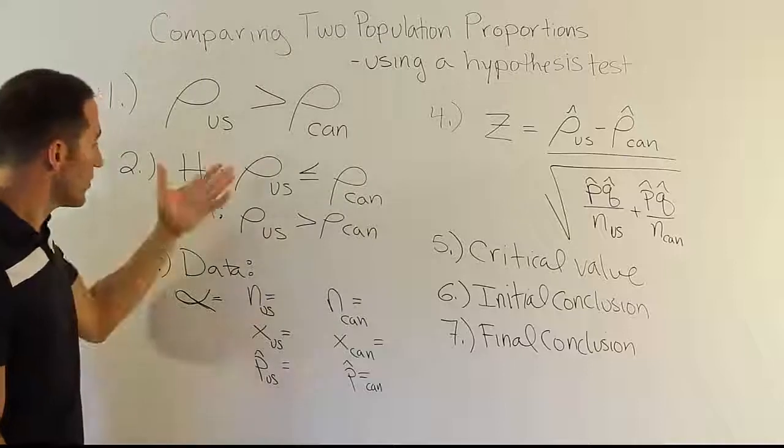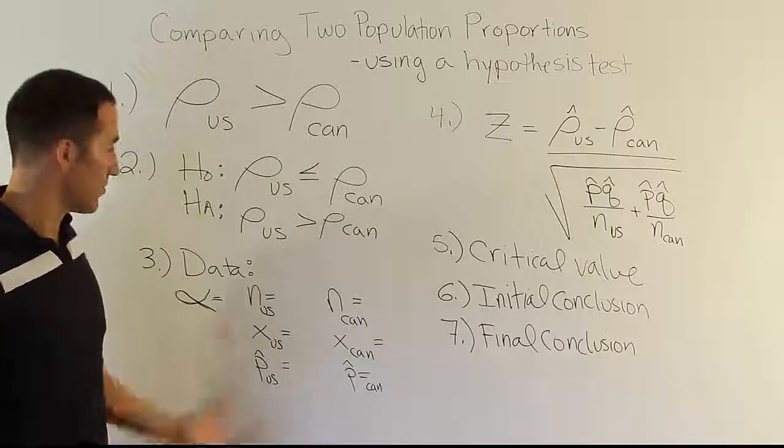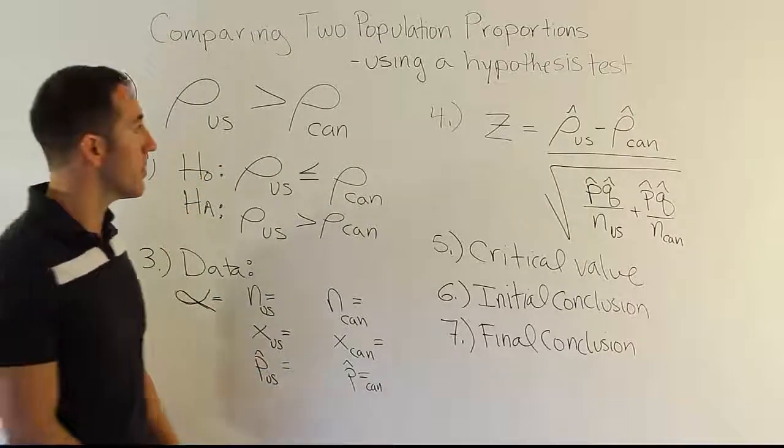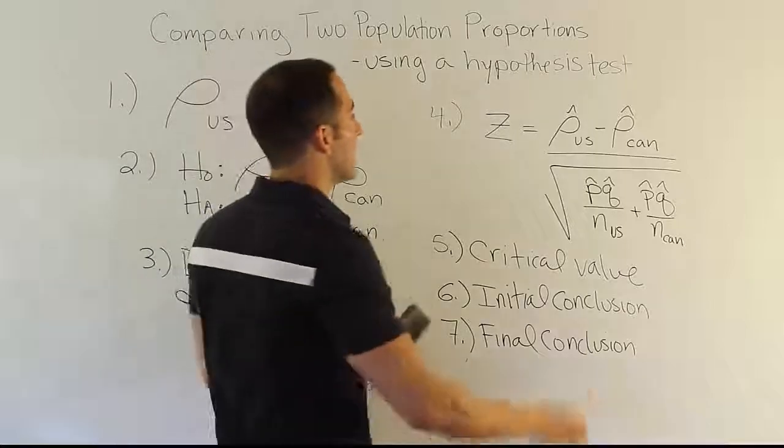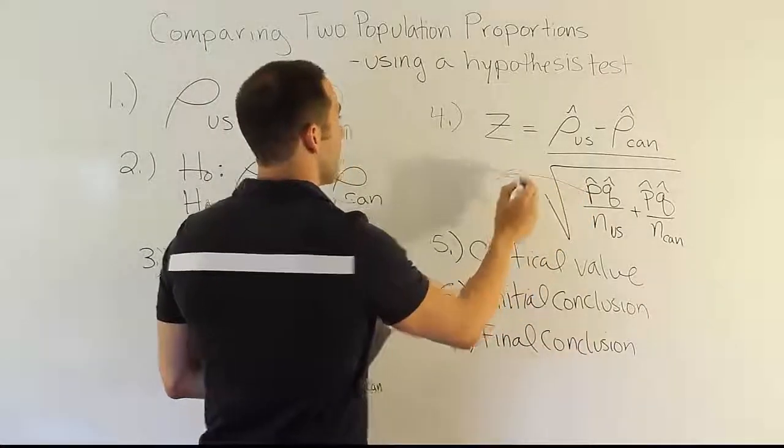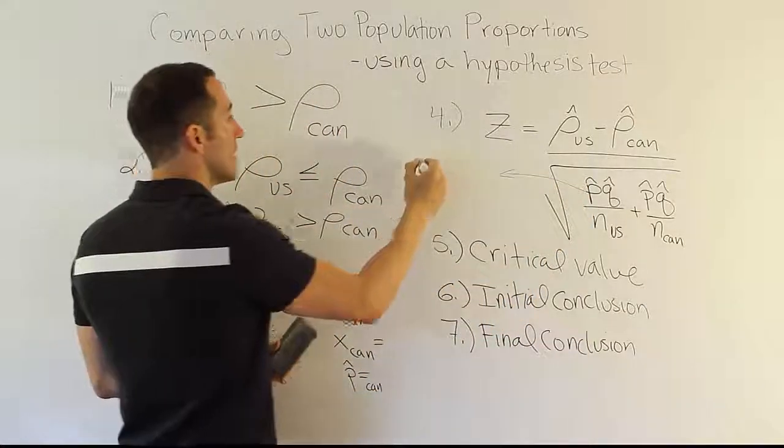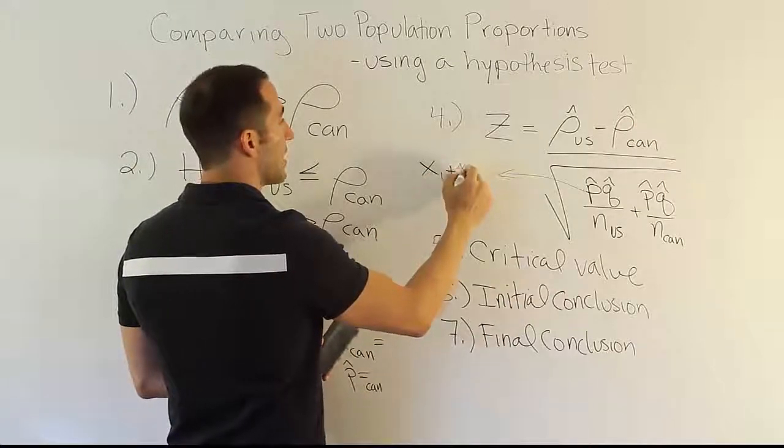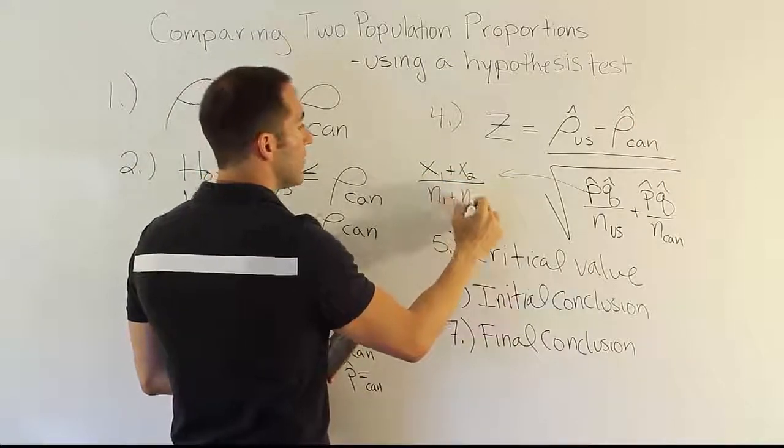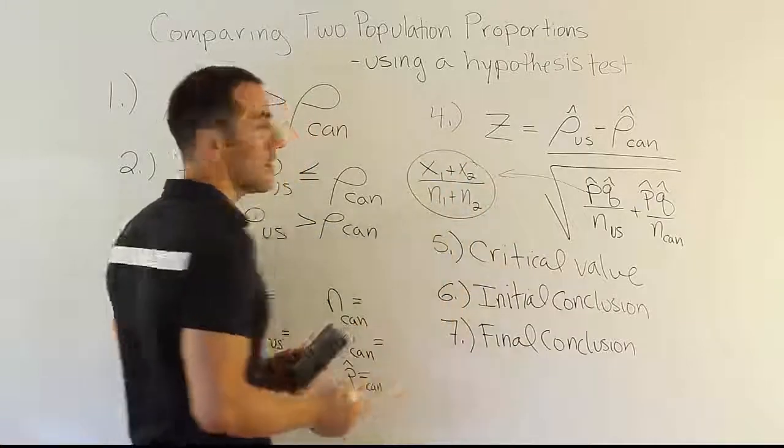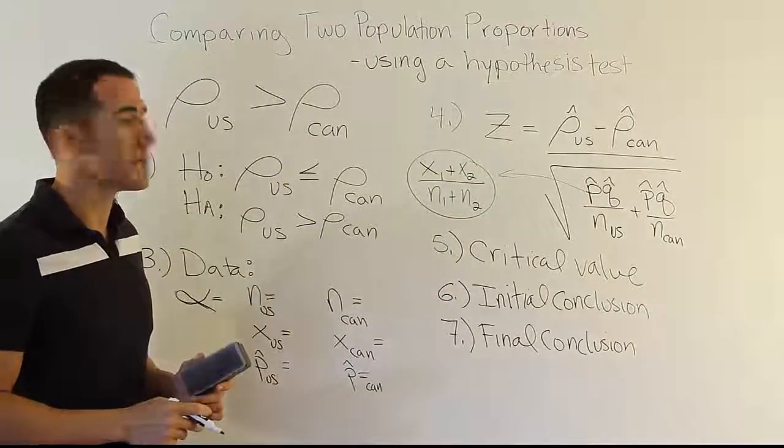So I think if you were able to do hypothesis testing in the past, this shouldn't be too much more difficult. Just remember where we get this p hat, q hat pair from. Remember that under H0, it's going to be x1 plus x2, n1 plus n2. That's how we get the p hat, and then to get the q hat, you just do one minus that.